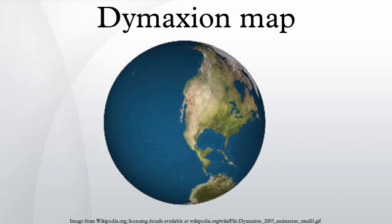Fuller intended the map to be unfolded in different ways to emphasize different aspects of the world. Peeling the triangular faces of the icosahedron apart in one way results in an icosahedral net that shows an almost contiguous land mass comprising all of Earth's continents — a world where there are not groups of continents divided by oceans. Peeling the solid apart in a different way presents a view of the world dominated by connected oceans surrounded by land. Showing the continents as one island Earth also helped Fuller explain, in his book Critical Path, the journeys of early seafaring people, who were in effect using prevailing winds to circumnavigate this world island.